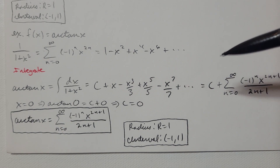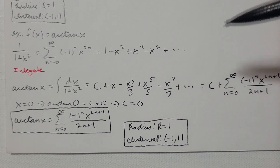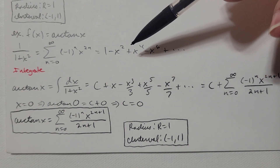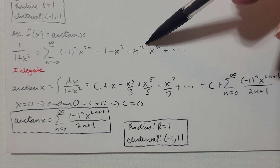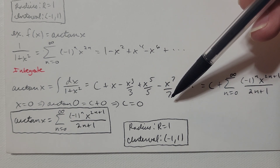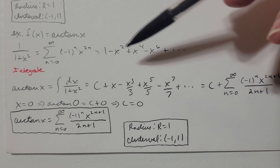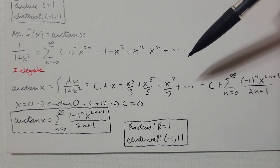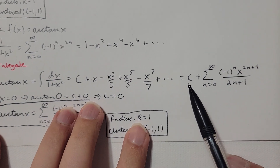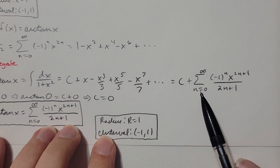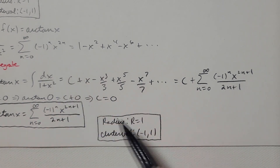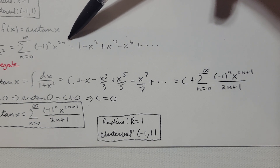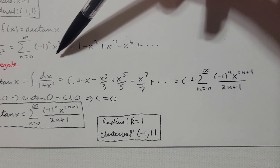Don't forget the constant of integration — I always write it first so I don't forget. The antiderivative of 1 is x, the antiderivative of -x² is -x³/3, then +x⁵/5, -x⁷/7, and so on — adding 1 to the power and dividing by the new power. As a series: C + summation as n=0 to infinity of (-1)ⁿ · x^(2n+1) / (2n+1).